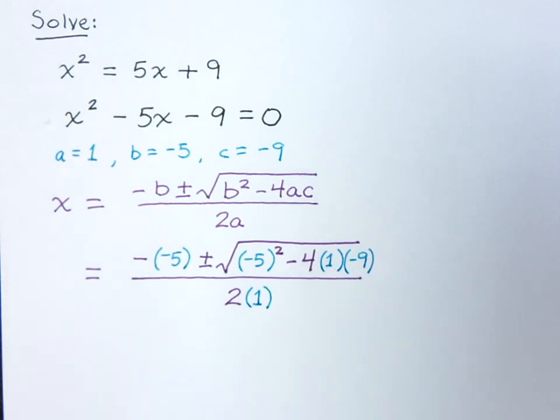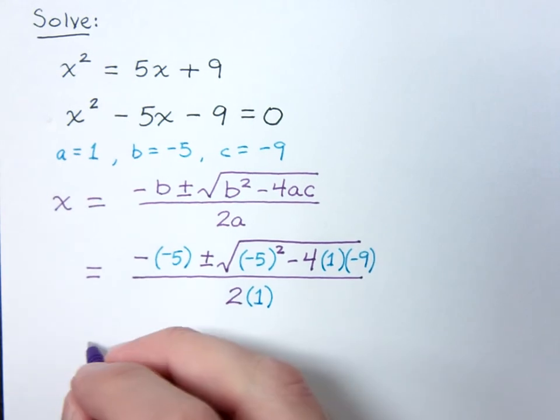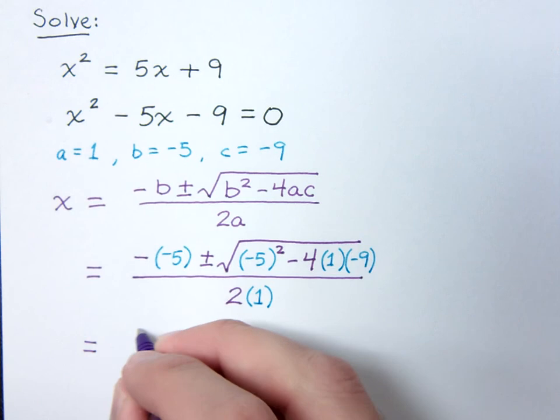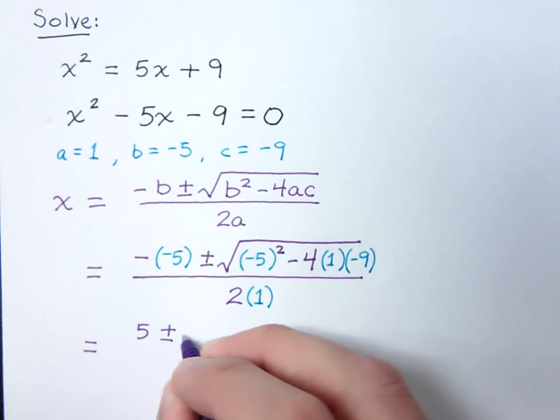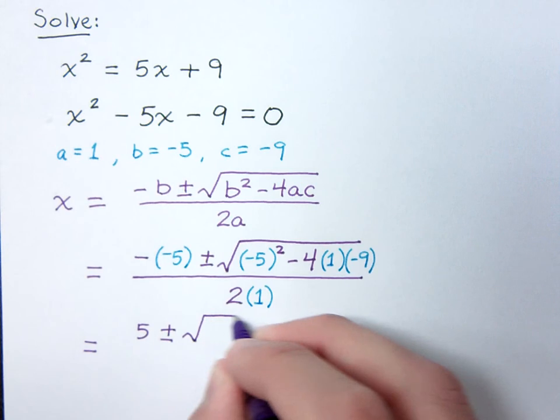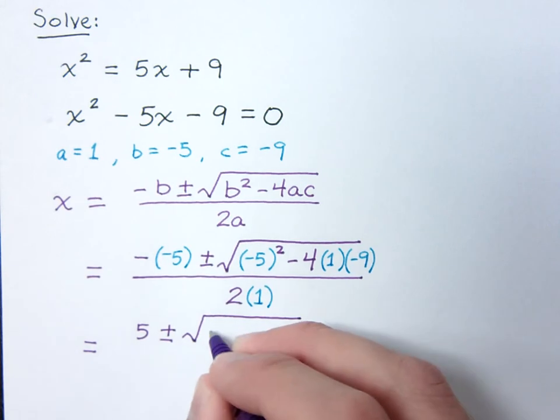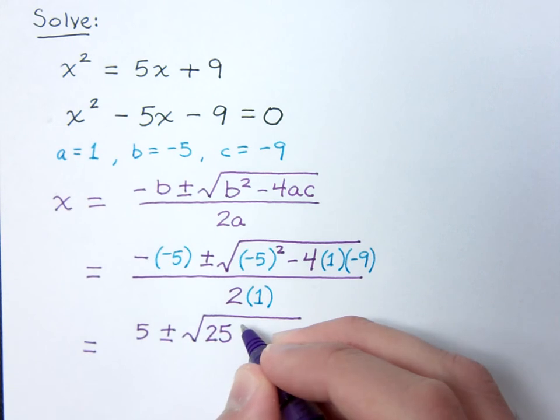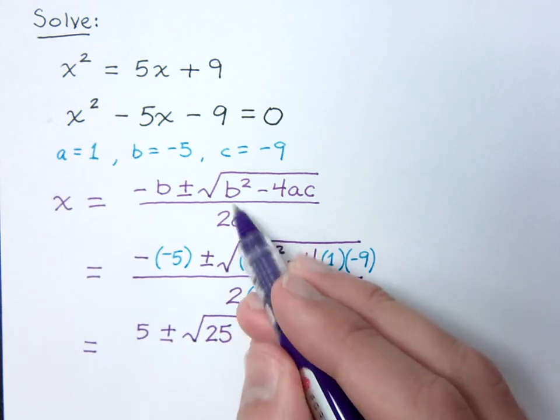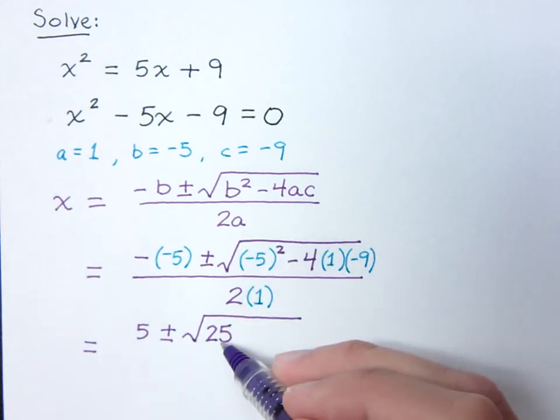So, now that we have everything plugged in, it's just a matter of doing the arithmetic here. Doing the algebra. So, here this is a positive 5 plus or minus the square root. Negative 5 squared is just going to be a positive 25. It doesn't really matter what b equals, if it's positive or negative. When you do b squared, it's always going to come back to be a positive.